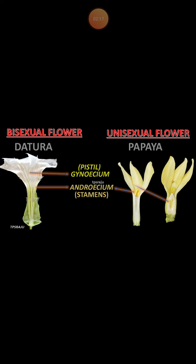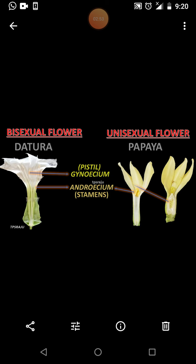A flower which has only one of these parts — either the gynoecium or the androecium — is called a unisexual flower. These are called imperfect flowers.